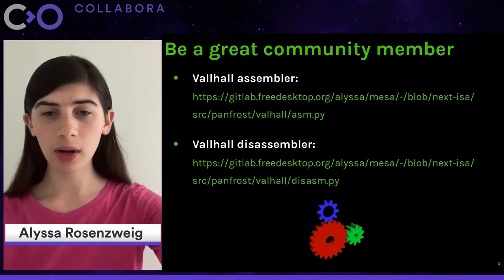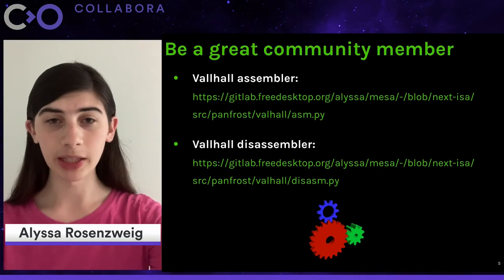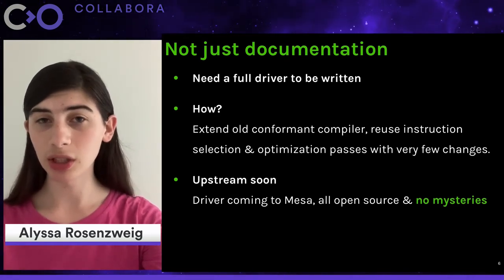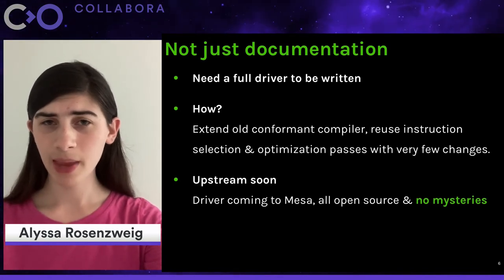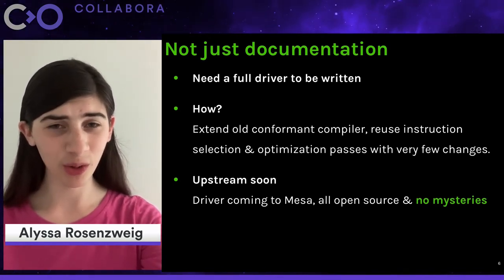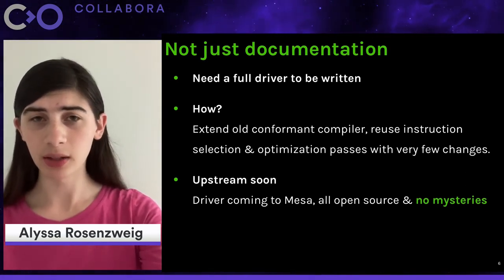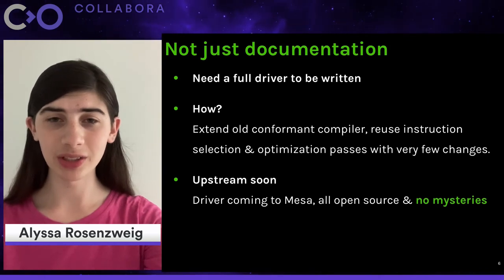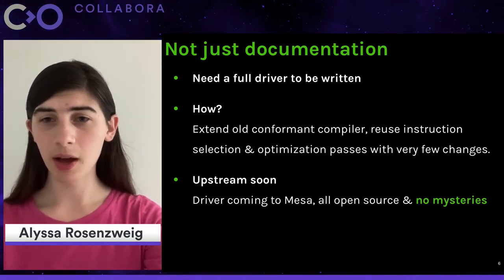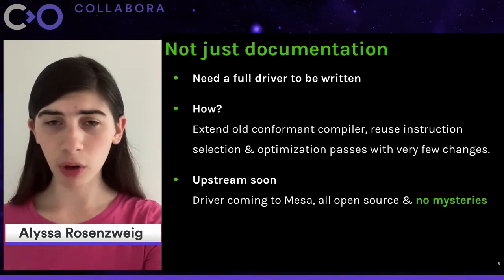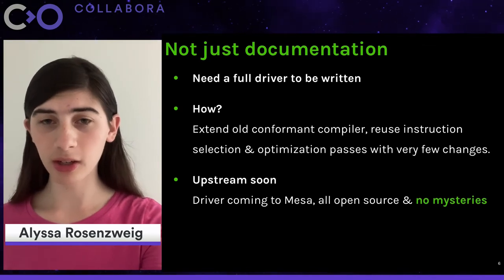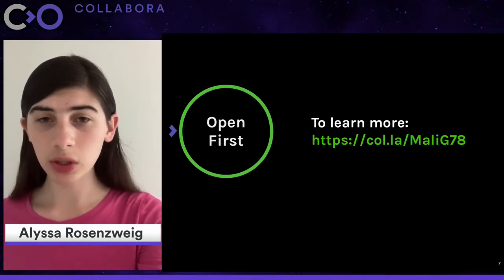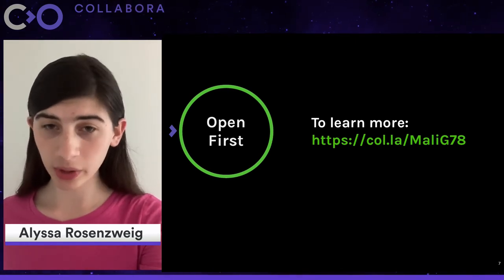It would be even better to have a disassembler and an assembler, both open source and upstreamed in Mesa. Being the great community member you are, you write those and upstream them - the vendor will thank you profusely. From there, you want a full driver. Since we know there's operational equivalence between instructions on the old and new hardware, and we already have a conformant compiler for the old hardware, all we have to do is extend that compiler to produce the new encodings. We can reuse all instruction selection and optimization passes with very few changes. With another few weeks of effort, you can spin a prototype targeting the new hardware, upstream that code, and before you know it you have a Mesa driver for this new hardware - all open source, no mysteries, open documentation.